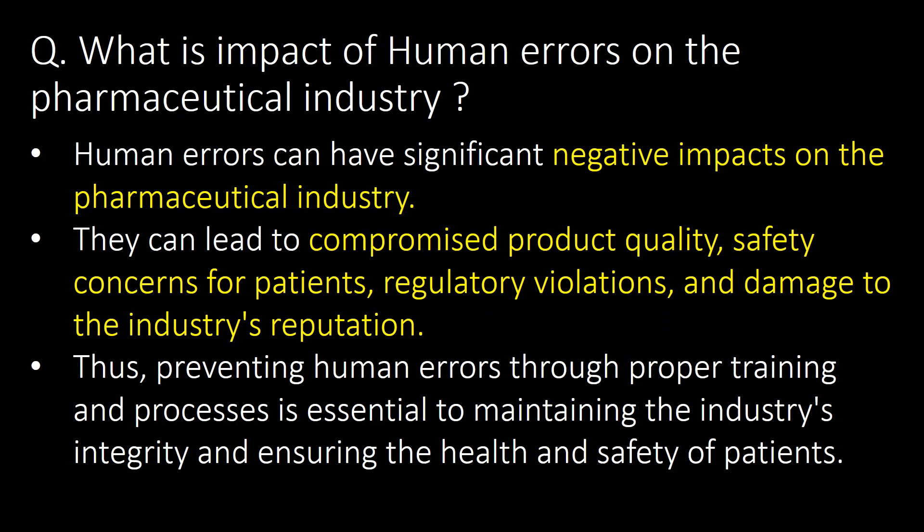What is the impact of human errors on the pharmaceutical industry? Human errors can have significant negative impacts on the pharmaceutical industry. They can lead to compromised product quality, safety concerns for patients, regulatory violations, and damage to the industry's reputation. Thus, preventing human errors through proper training and processes is essential to maintaining the industry's integrity and ensuring the health and safety of patients.